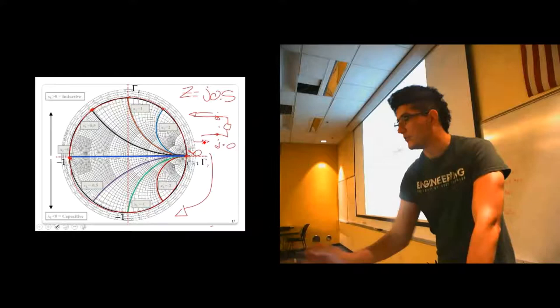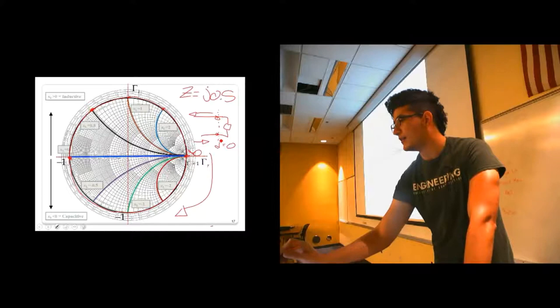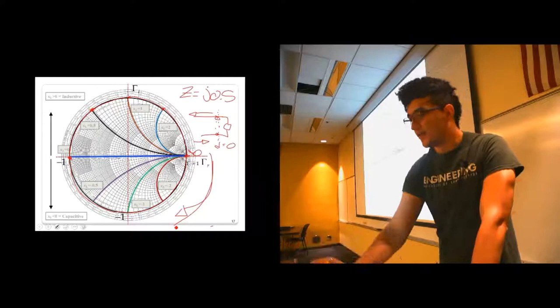Since all of the equations are defined like this, derivated like this with the zero or reference zero equal here at this interface at the load, anytime that you move clockwise, you're moving towards the generator. So you're following this convention. If you move counterclockwise in the Smith chart, you're moving towards the load.